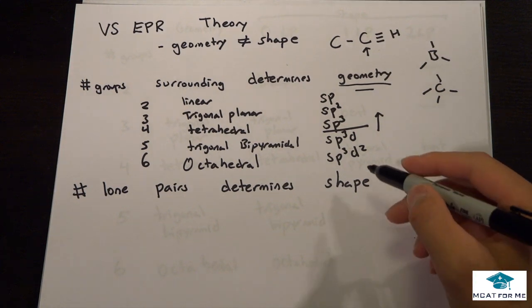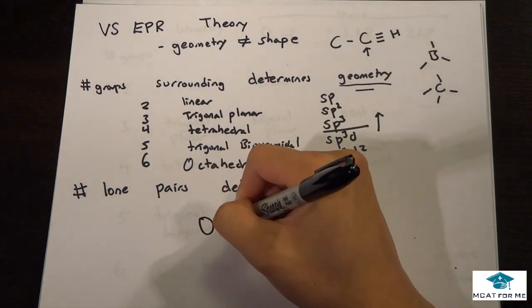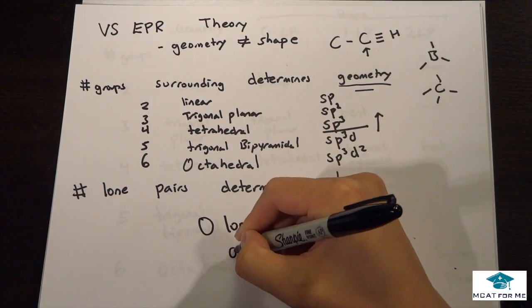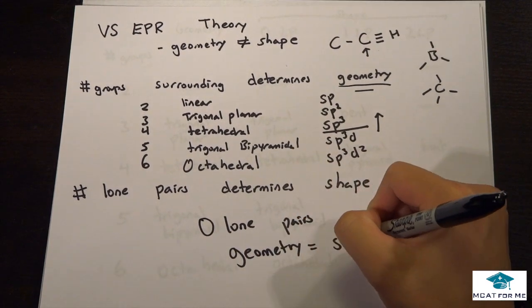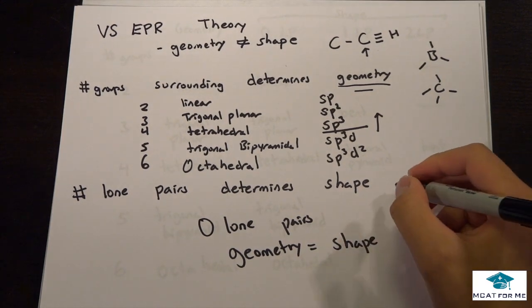But the thing is this: if we have zero lone pairs, the geometry is the same as the shape. But if we do have a lone pair, so what do I mean by that?